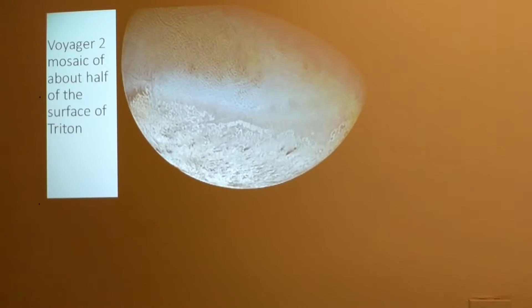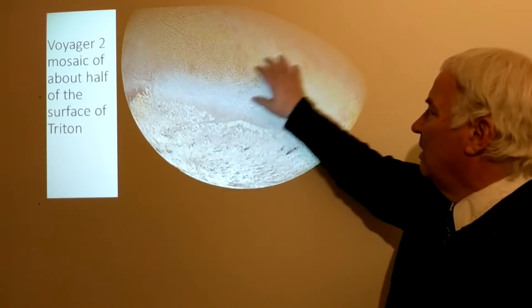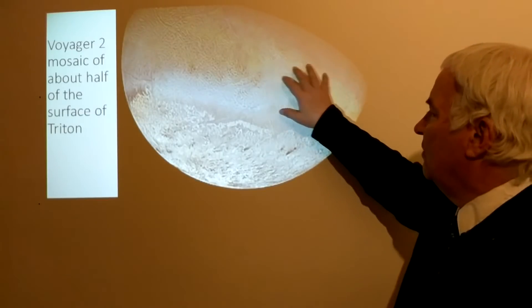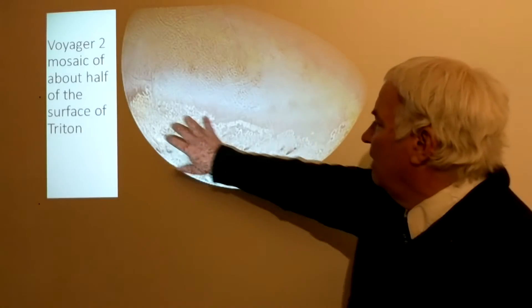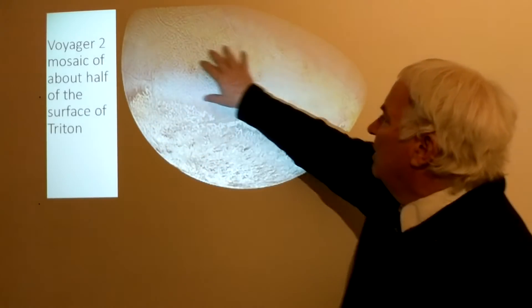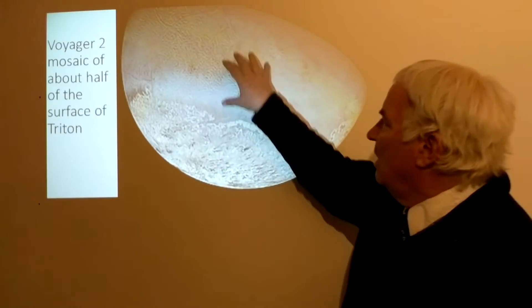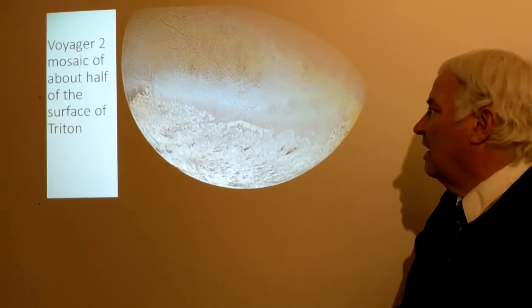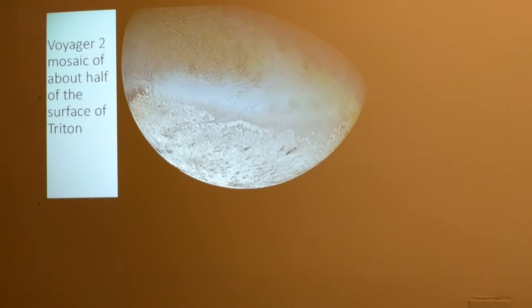Voyager 2 was able in a flyby to photograph only about half the surface of Triton but did so very well. We got a mosaic here, so this is a combination of many photographs. Under high resolution we can see a lot of detail. We can see that there is a very different kind of terrain in this part and a very different area here. This area here is called the cantaloupe terrain because it kind of looks like the surface of the cantaloupe fruit.